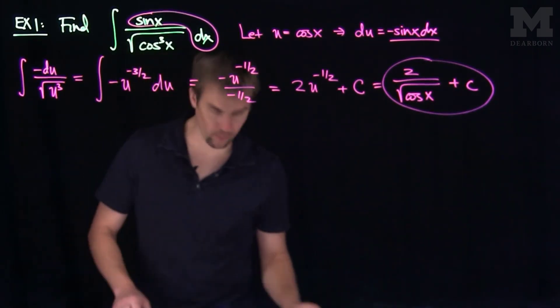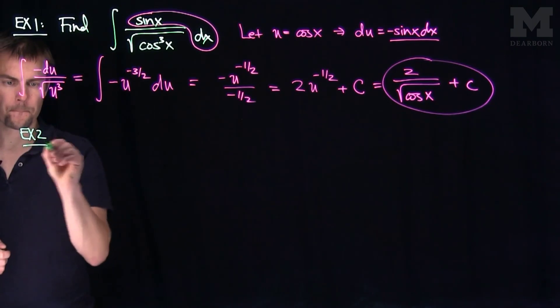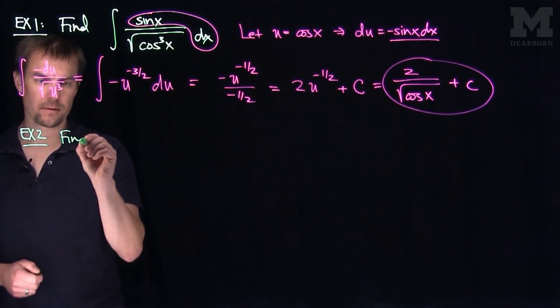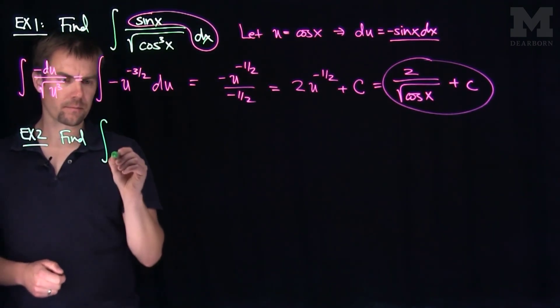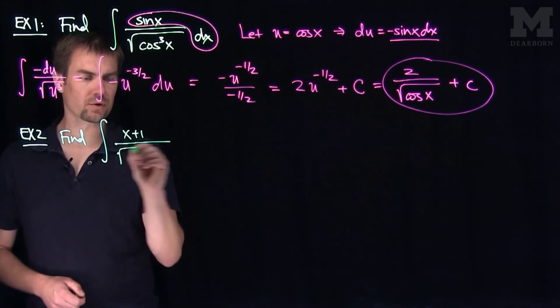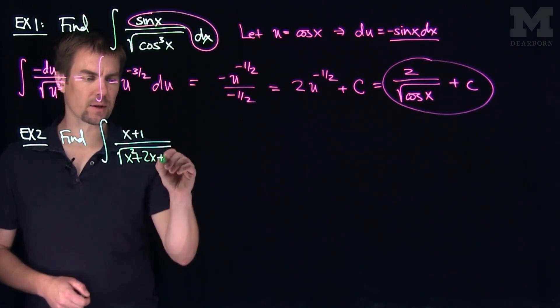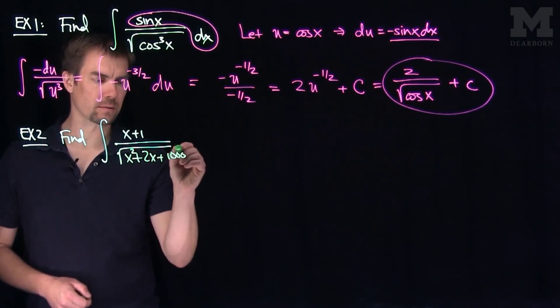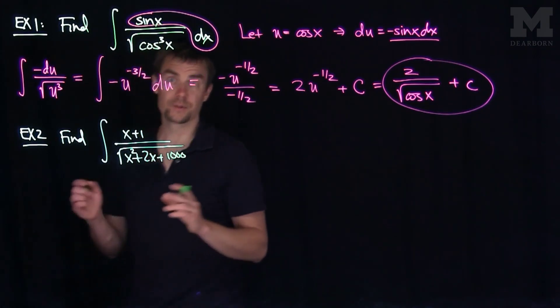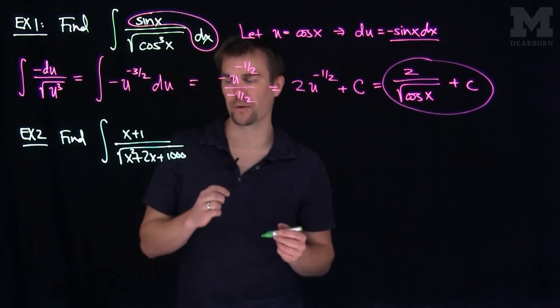Let's take a look at another example of the same form. Example 2. Let's find the integral of x plus 1 over the square root of x squared plus 2x plus 1000. Again, this looks pretty messy. That quadratic doesn't look so nice. However, what we can observe is the following.